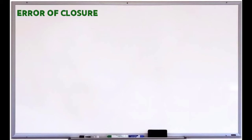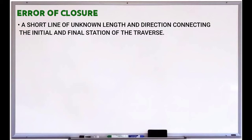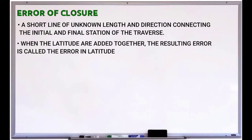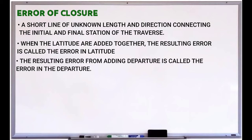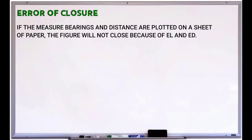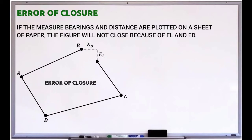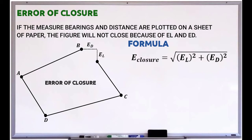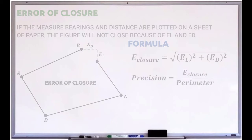We will have an example about latitude and departure shortly, but first let's proceed to the error of closure. The error of closure is a short line of unknown length and direction connecting the initial and final station of the traverse. The resulting error from adding latitudes is called the error in latitude, and from adding departures, the error in departure. The formula is: error of closure equals the square root of (error in latitude squared plus error in departure squared). The formula for precision or relative error equals error of closure divided by the perimeter of all courses.